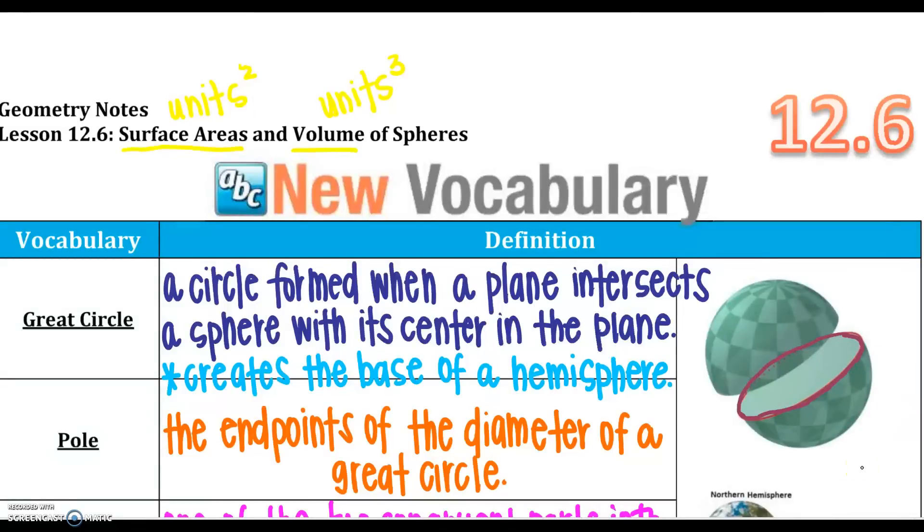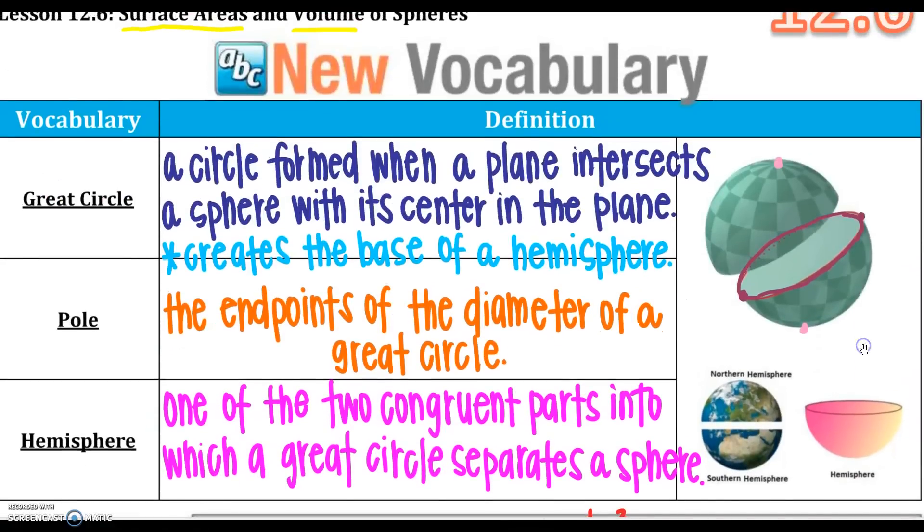A hemisphere is just half of the sphere. A pole, if you think of the north pole and the south pole, it's just the endpoints of the diameter of the great circle. So each great circle has two endpoints. If you think if I cut the world or the globe in half, I have a north pole and a south pole. That would be my great circle as well. Hemisphere, one of the two congruent parts into which the great circle separates the sphere. So the hemisphere is created by half of a sphere, and then it has a base as a circle.